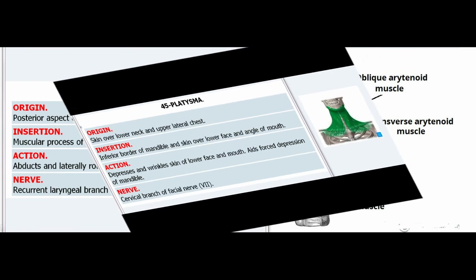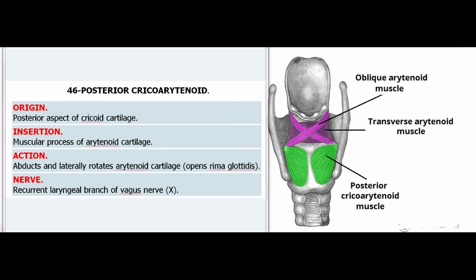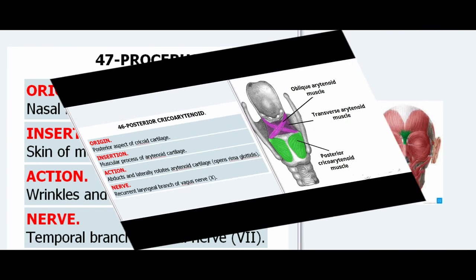46. Posterior Cricoarytenoid. Origin: Posterior aspect of cricoid cartilage. Insertion: Muscular process of arytenoid cartilage. Action: Abducts and laterally rotates arytenoid cartilage, opens rima glottidis. Nerve: Recurrent laryngeal branch of vagus nerve (X).